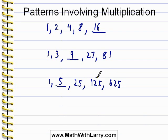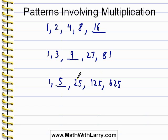What we're working with here is called geometric progressions. A geometric progression is when we multiply by a particular value to get from one item in the list to the next — we multiply by the same constant number. In the first example we always multiplied by 2, here we multiplied by 3, and here we multiplied by 5. Those are called geometric progressions.